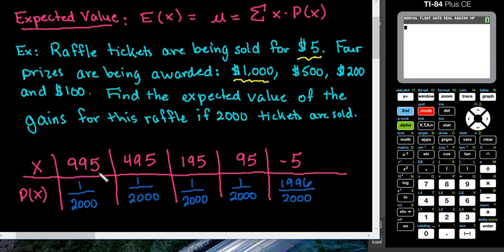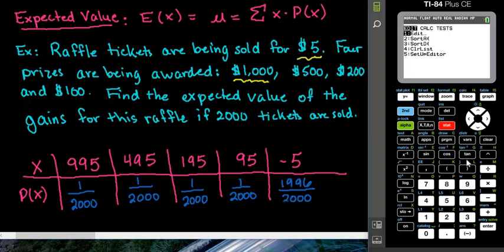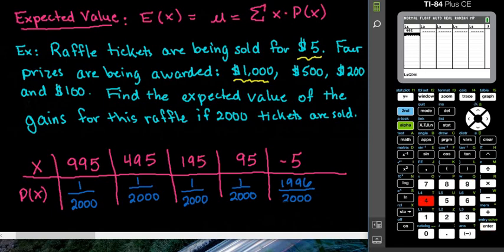So in order to use the calculator to do this, we're going to do what we do a lot of times in the graphing calculator. We're going to hit the stat button and go to edit. And I'm going to enter all of my gains in L1, and I'm going to enter all of my probabilities in L2.